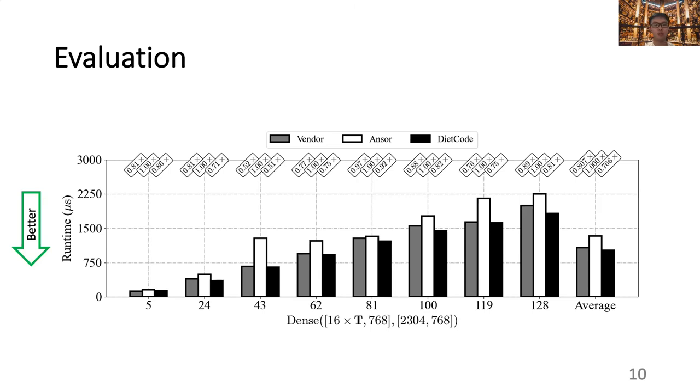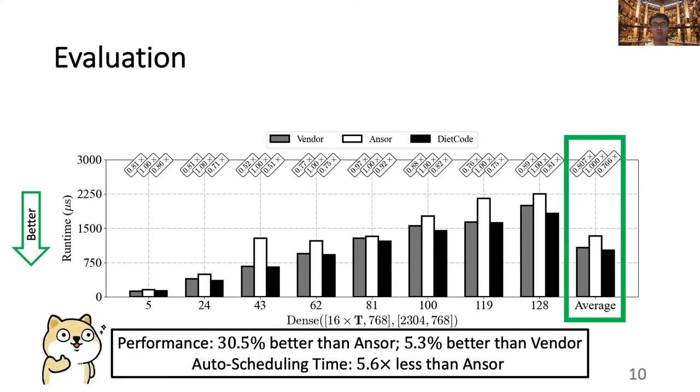We observe that, with those sampled sequence lengths, DietCode delivers on average 30% better than Ansor, the current auto-scheduler design in TVM in terms of performance, and 5% better than the cuBLAS vendor library. Furthermore, since DietCode only needs to auto-schedule once and for all shaped instances, its auto-scheduling time is 5.6 times less than Ansor.